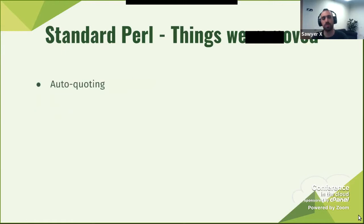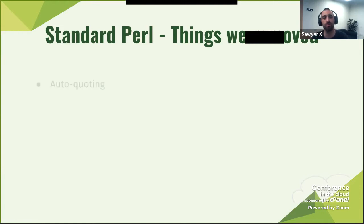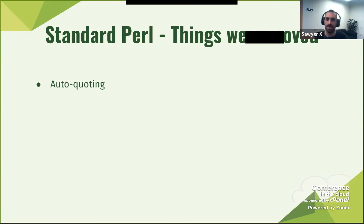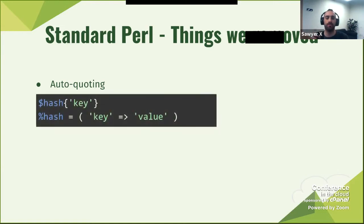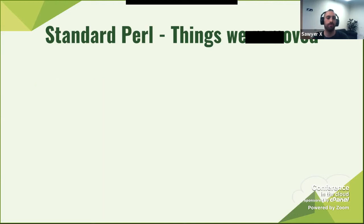Things we removed: first, auto-quoting. I'm going to get a lot of enemies from this. Before I begin — no one has to do this, no one has to use this, but you might get some benefits if you do. Auto-quoting is gone. Auto-quoting is a mess. The rules for auto-quoting are just incredibly difficult. In standard Perl, if it's a string, it is quoted. That's it. There are no other options.